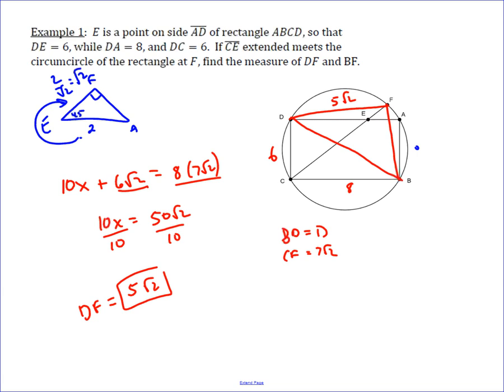Well, now we can apply Ptolemy's again to find BF. It would be 6 times Y plus 8 times 5 root 2 is just 40 root 2. So those are the opposite sides of our cyclic quadrilateral, which is BCDF. And then that equals the product of the diameters, or the diagonals. So BD is 10, and CF was 7 root 2.